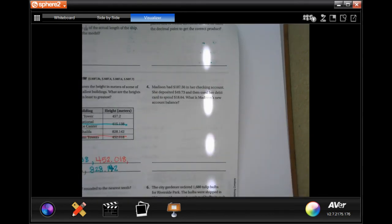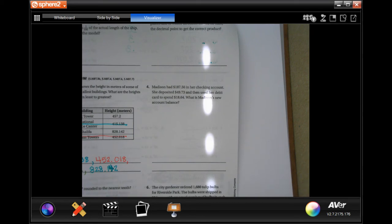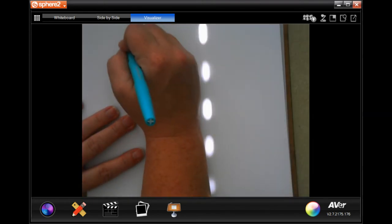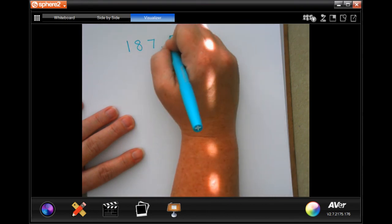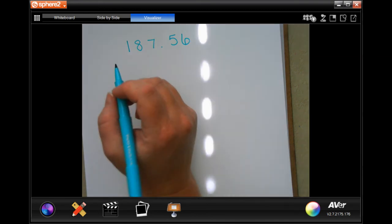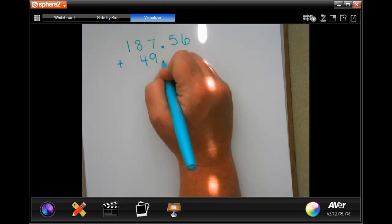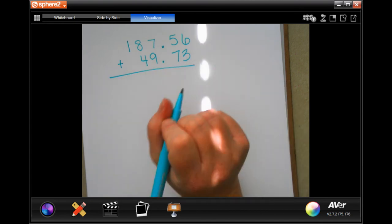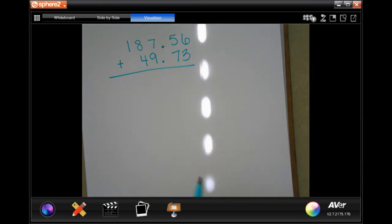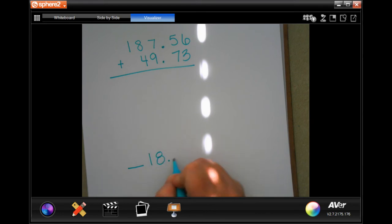Madison had $187.56 in her checking account. She deposited $49.73 and then used her debit card to spend $18.64. What is Madison's new account balance? So I'm going to write down over here what she started with. Now, she deposited. That means that she added $49.73. So first, we're going to add those up. That's the first step. Whatever the answer to that is, we are then going to take away $18.64 that she spent. Whatever our answer is, it's going to be in money.